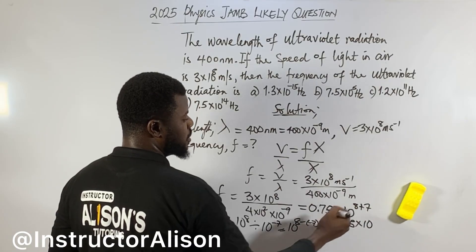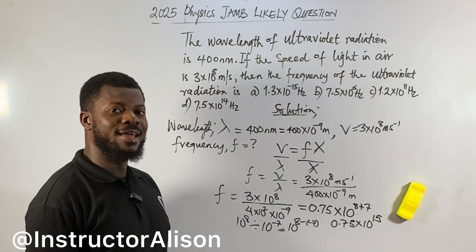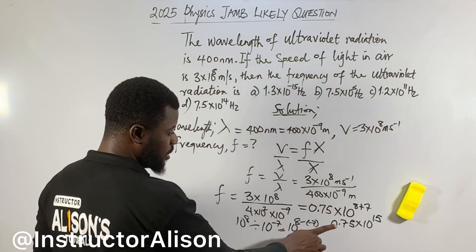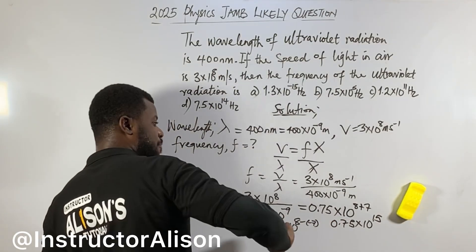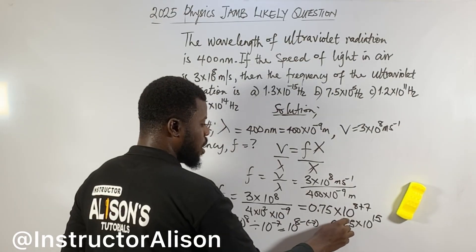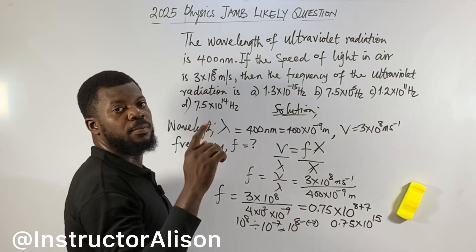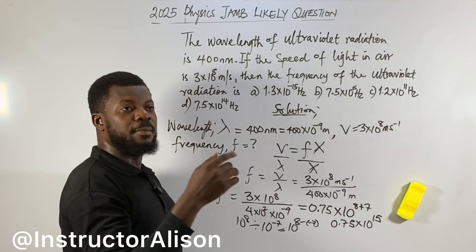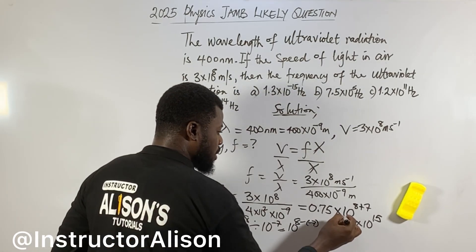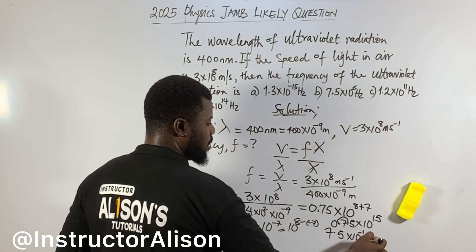So 0.75 times 10 to the power of 15 — but check your options; you need to convert this to proper standard form. I'm teaching you how to move the decimal point. If I move from right to left I add to the power; if I move from left to right I subtract from the power. So if I move this decimal point one place to the right, 0.75 becomes 7.5, and it becomes 7.5 times 10 to the power of minus 1, times 10 to the power of 15.